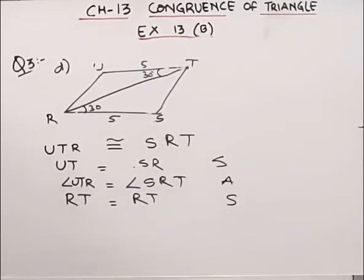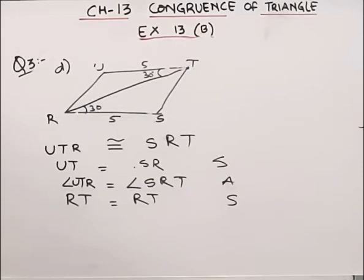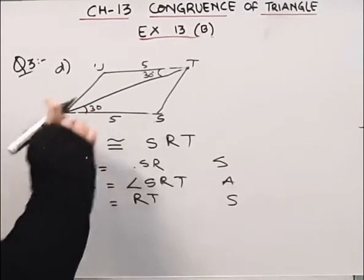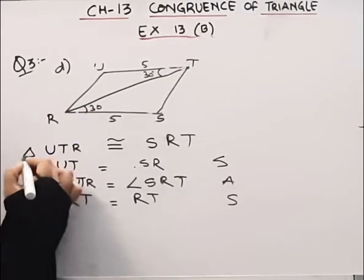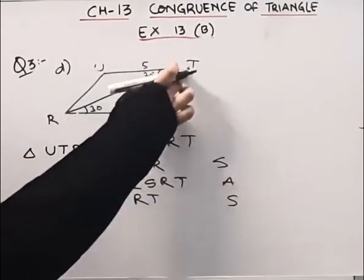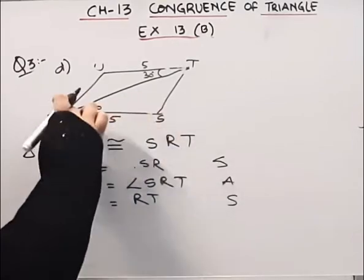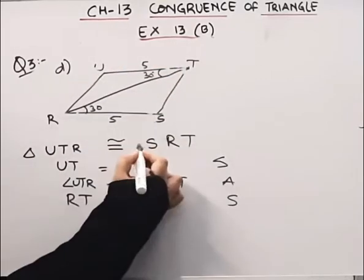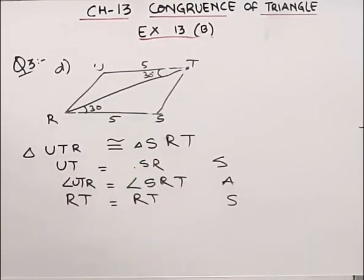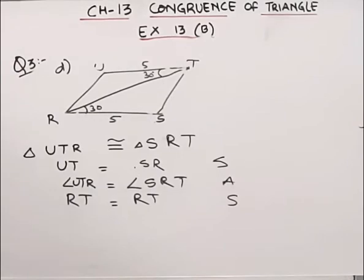So the SAS criteria applies here. Triangle UTR is congruent to triangle SRT. So here we complete the D part of this question.